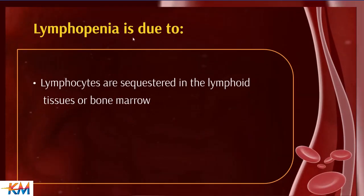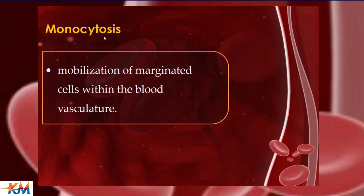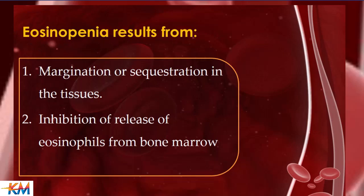Lymphopenia in stress leukogram has two causes: sequestration of lymphocytes in lymphoid tissues and bone marrow, decreasing their blood count; and lysis of lymphocytes due to long-term corticosteroid use. Monocytosis occurs due to mobilization of marginated monocytes, as monocytes have marginal and central pools like neutrophils, so shifting from marginal to central increases monocyte count. Stress also causes eosinopenia by inducing margination of eosinophils and inhibiting their release from bone marrow.